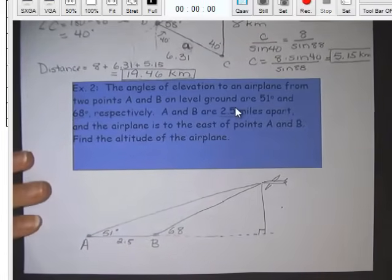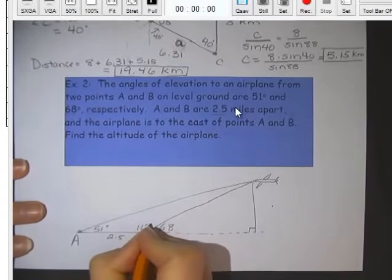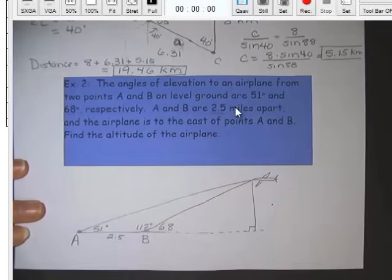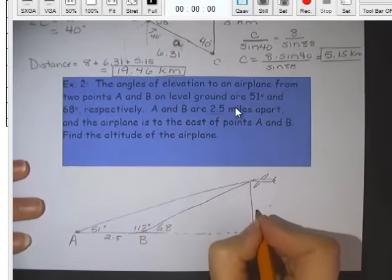So this is, of course, 112 degrees because we've got a linear pair there adding up to 180. And we want to first find this altitude. I'm going to just call that X, so not to confuse it with A and B.